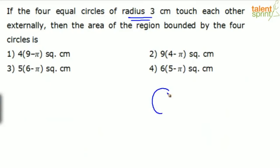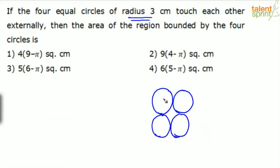So how will it look? This is circle number one, then here is the second circle, this is the third one, and here we have the fourth one. The area of the region bounded by the four circles — this is the region you have to find.